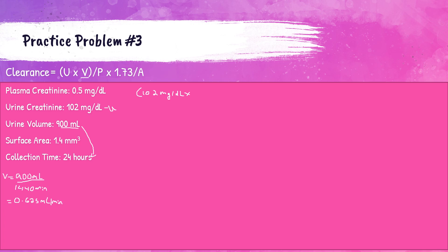So U times V: 102 times 0.625. Now we divide by our P value, which is the concentration of serum or plasma creatinine in mg/dL — that's 0.5 mg/dL. The milligrams per deciliter units cancel out, leaving us with milliliters per minute. So 102 times 0.625 divided by 0.5 gives us 127.5 milliliters per minute.